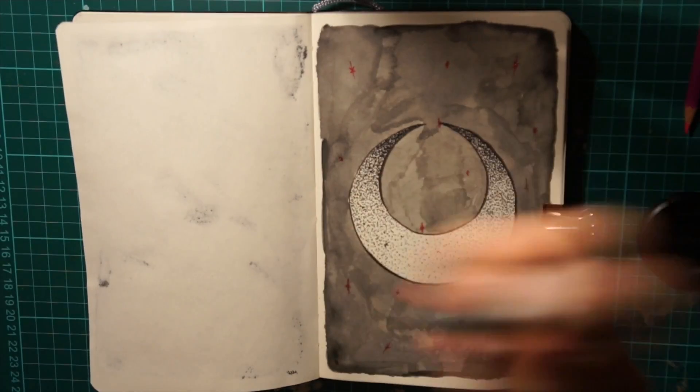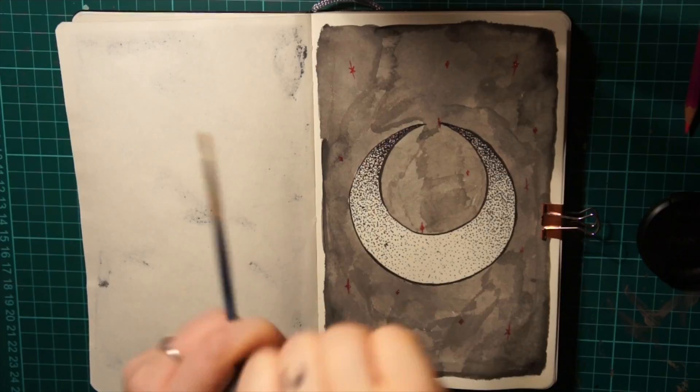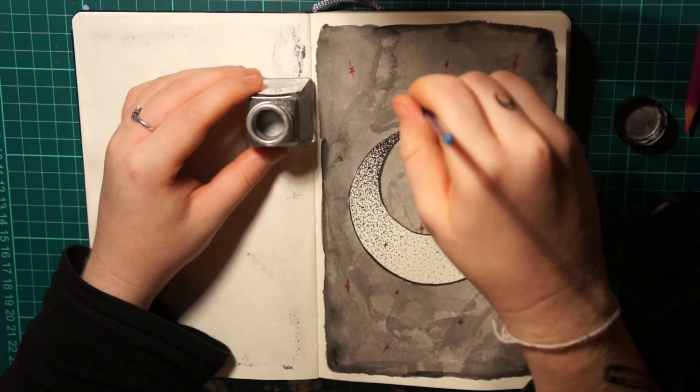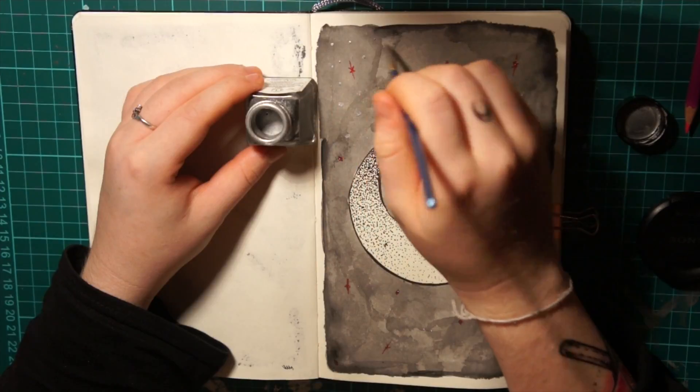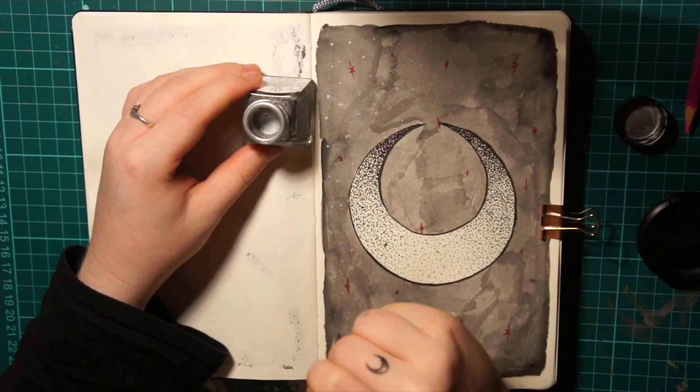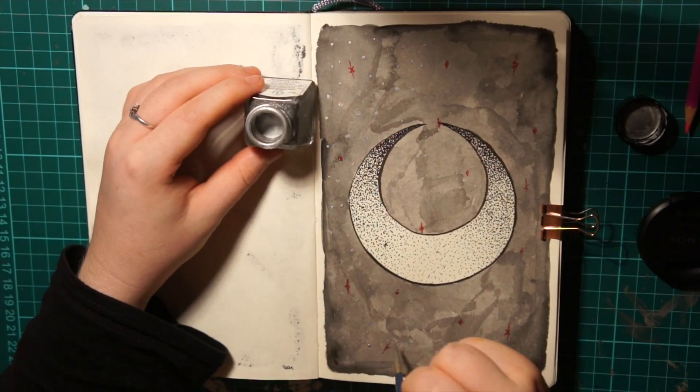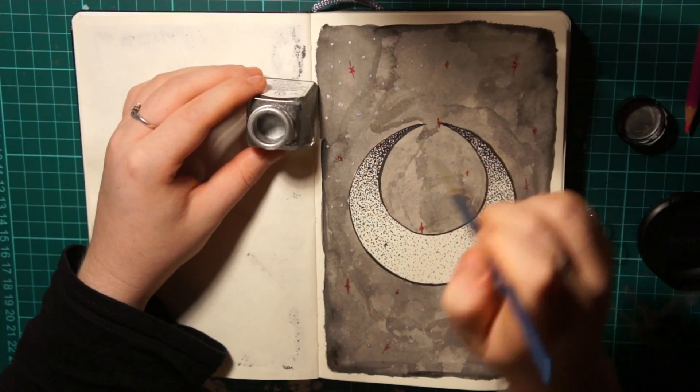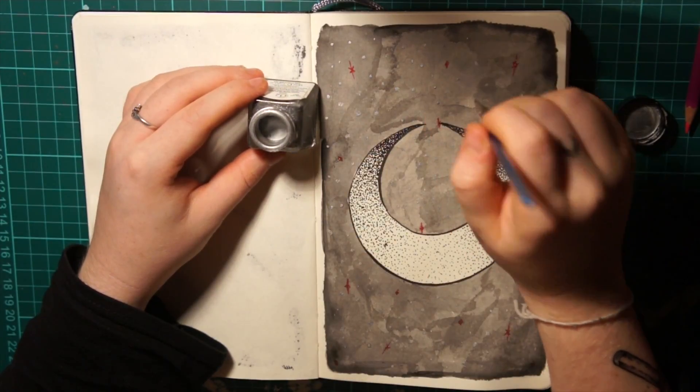And this is my Winsor and Newton silver ink. All my metallic inks I use are Winsor and Newton and I find you have to really mix that one up because they're quite alcohol based, if that makes any sense. So the actual metallic pigment itself settles to the bottom, so especially with the gold one you have to really dig in there and just mix it all around.